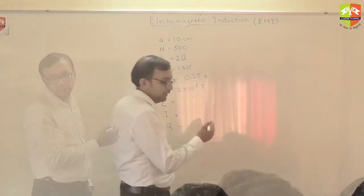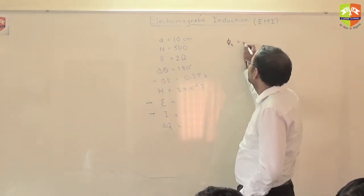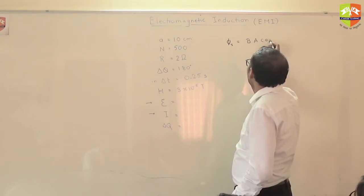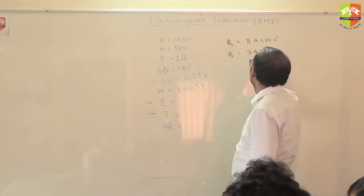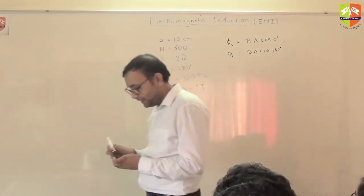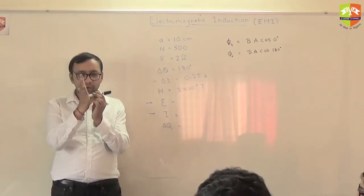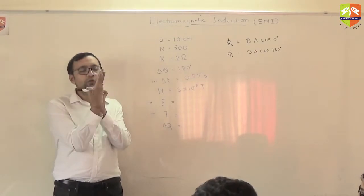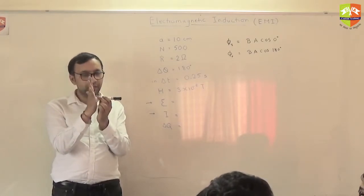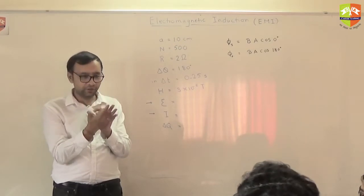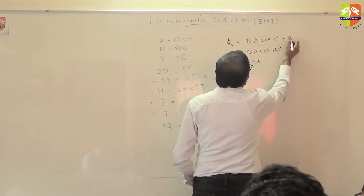Initial flux is B into A into cos(0). Final flux is B into A into cos(180 degrees). You can choose your area vector initially like this — once you have chosen, this area vector becomes fixed; it rotates with the coil. You can't change your area vector after it rotates. If the coil rotates, the area vector also rotates. So the final flux is equal to minus BA, and initial is BA, so the change is what...